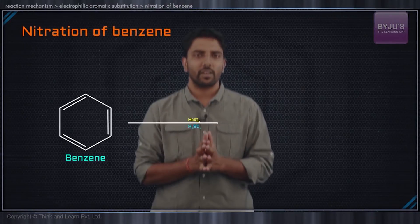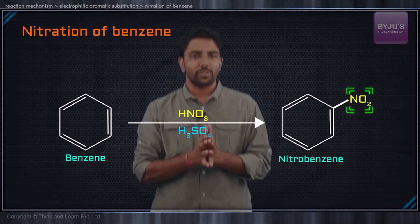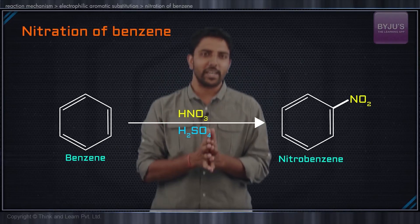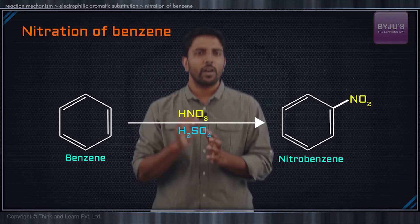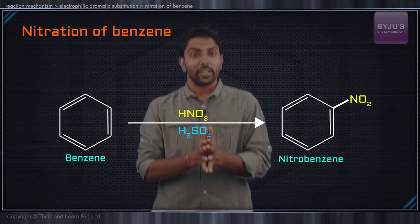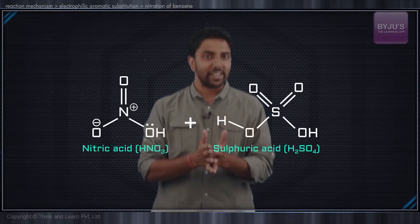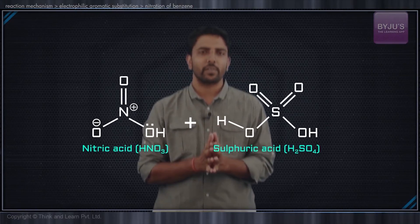Let us quickly move on to another major example of electrophilic aromatic substitution: the nitration of benzene. Here, we introduce a nitro group, which replaces one of the hydrogen atoms in the benzene ring. To be able to do this, we require two very powerful reagents — a mixture of concentrated nitric acid as well as concentrated sulfuric acid.